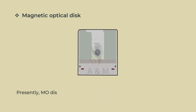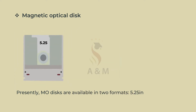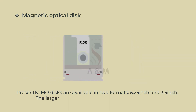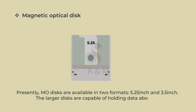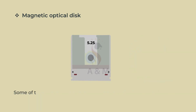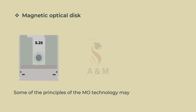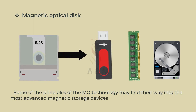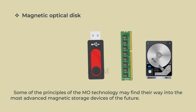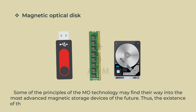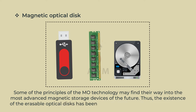Presently, MO discs are available in two formats: 5.25-inch and 3.5-inch. The larger discs are capable of holding data about as much as a standard CD-ROM. Some of the principles of MO technology may find their way into the most advanced magnetic storage devices of the future. Thus, the existence of erasable optical discs has been made feasible due to this technology.